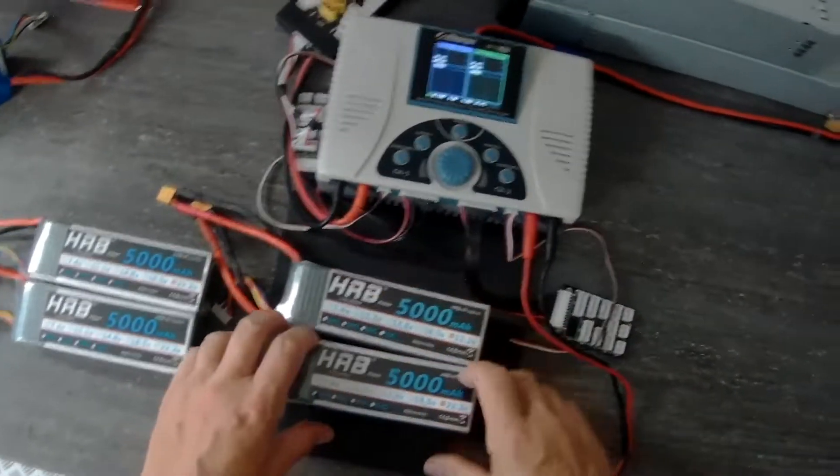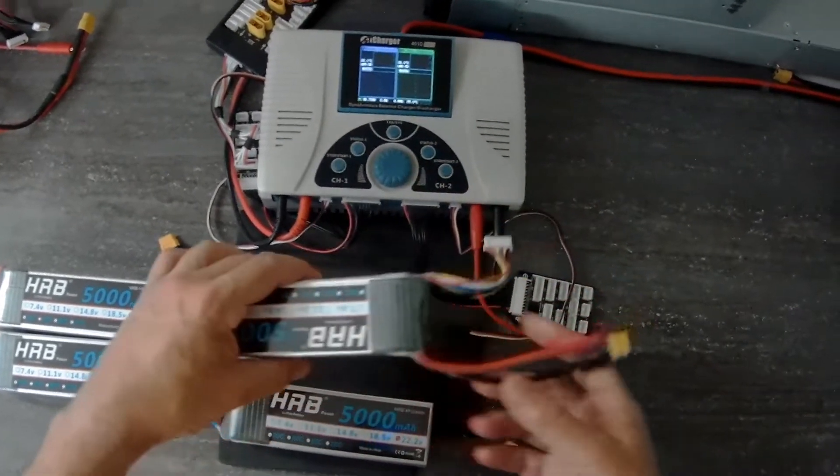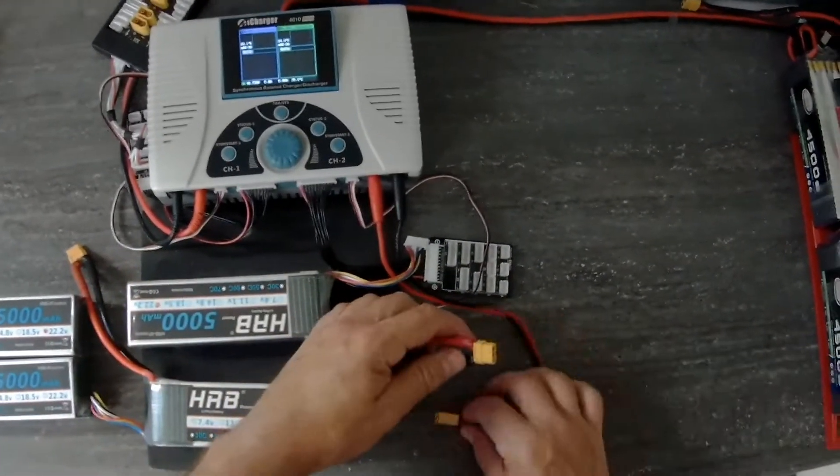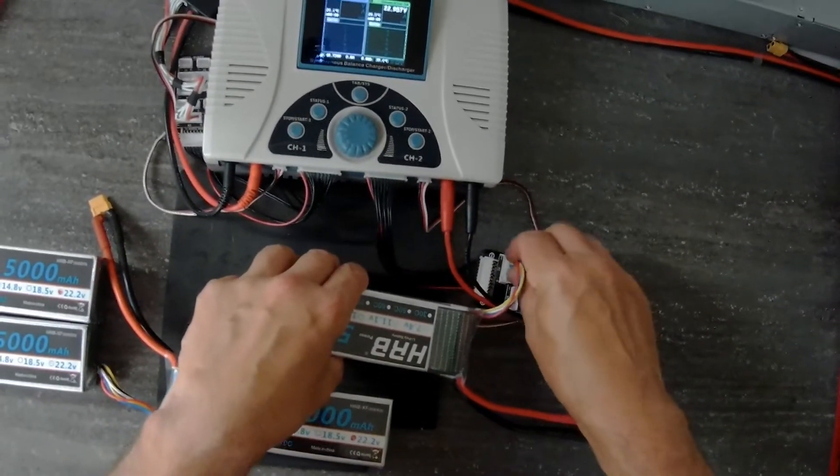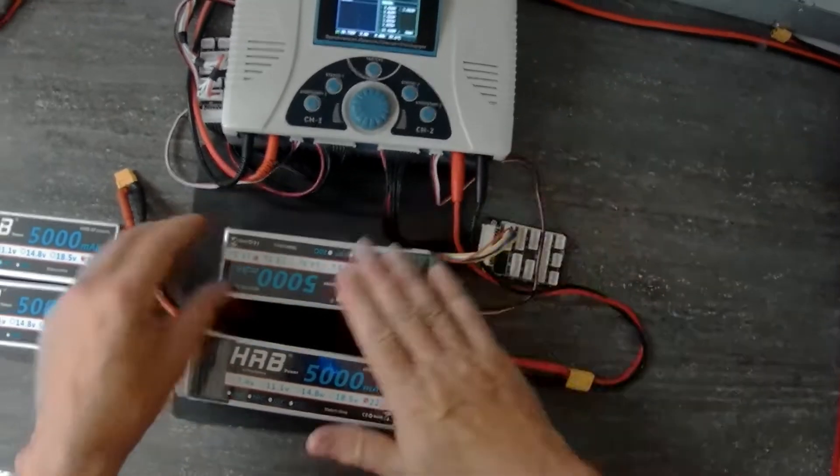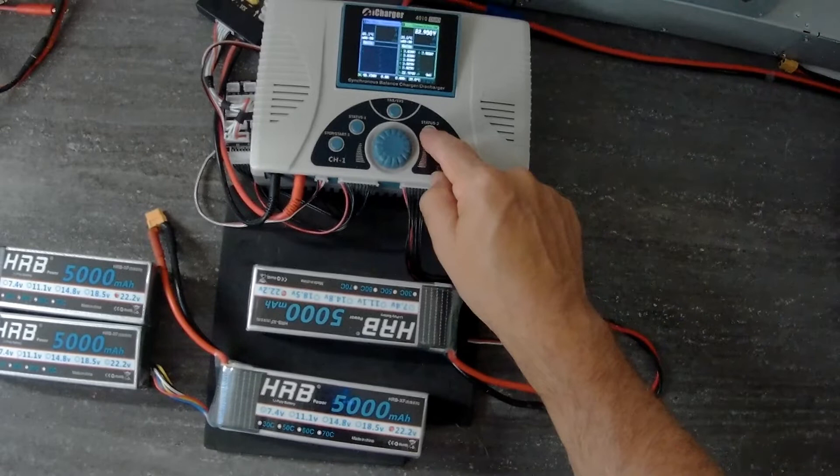So HRB suggested I do three bench cycles at 1C—that's 1C charge, 1C discharge—as a sort of break-in. I don't really believe in break-in, but I did as I was told and I've bench-cycled these packs. So I'm going to check internal resistance now.